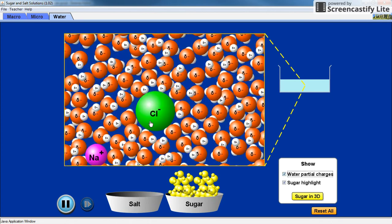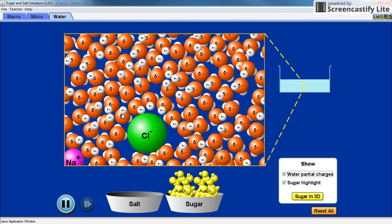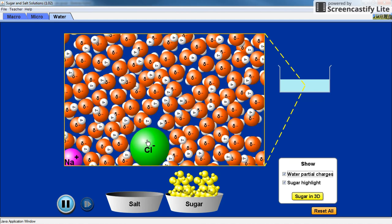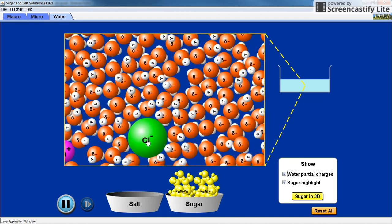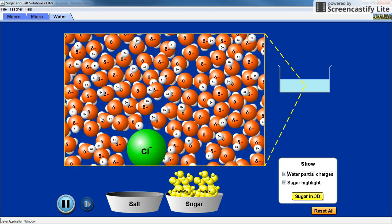Notice that the negative chloride ions get surrounded by water molecules where the hydrogens are closest to it. So again think why this would happen. Think of the amount of disorder in the system when something dissolves. Does it increase or decrease?